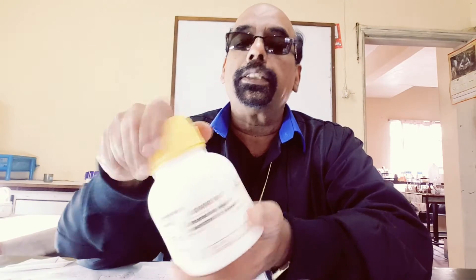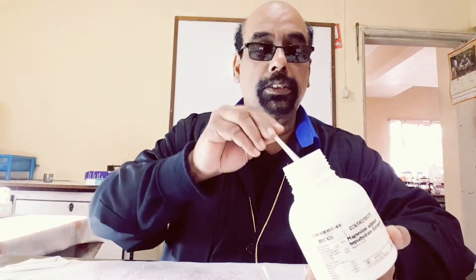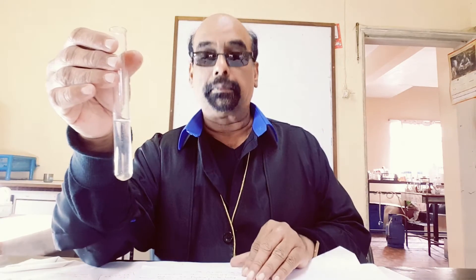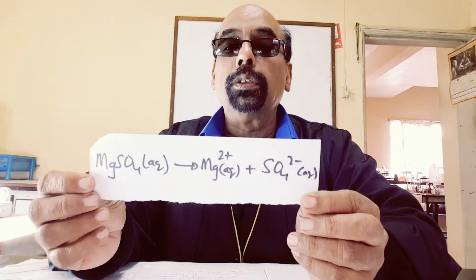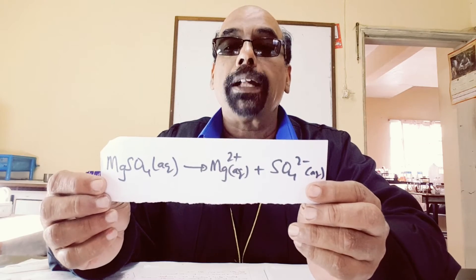This is magnesium sulfate — it is a white solid. It is soluble in water; the solid dissolves to give a colorless solution. This solution contains magnesium sulfate, which dissociates into magnesium ion (Mg²⁺ aqueous) and sulfate ion (SO₄²⁻ aqueous). Today we are going to test for the presence of magnesium ion in a solution.